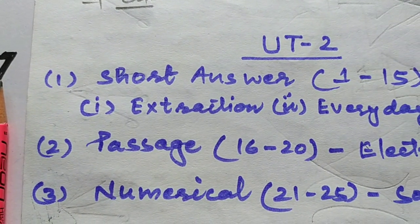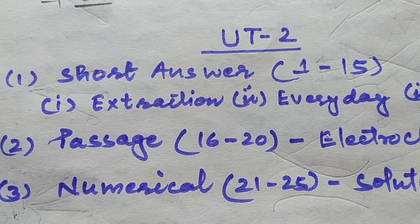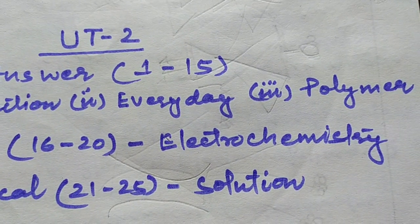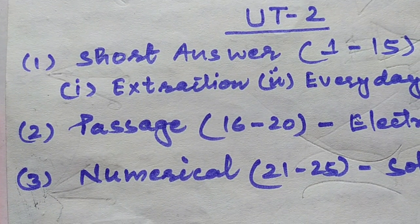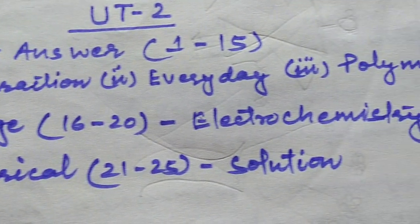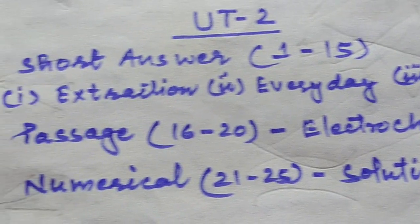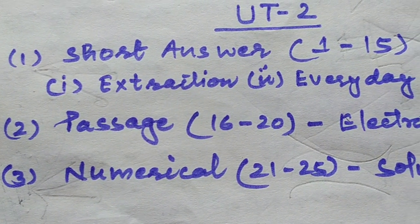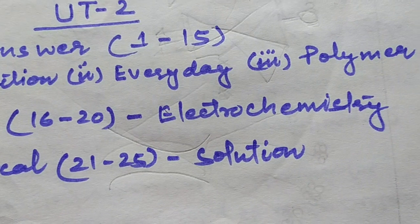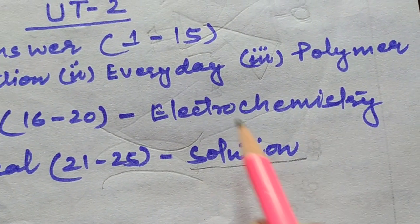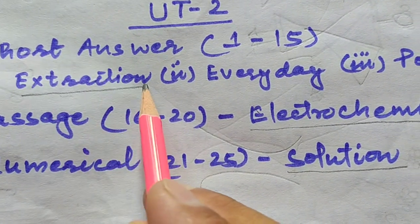The paper is divided into three parts. Part one is short answer, based on questions 1 to 15, covering three chapters: extraction, chemistry in everyday life, and polymer. Part two is the passage section, questions 16 to 20, based on electrochemistry. Part three is numerical, questions 21 to 25, based on the chapter solution and electrochemistry.